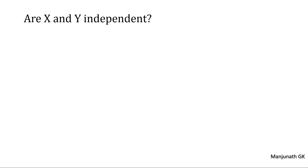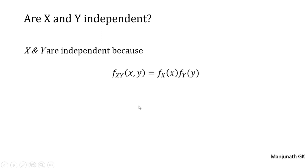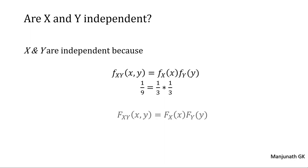Are X and Y independent? To say yes, the bivariate PDF must equal the product of the individual PDFs. The bivariate PDF is 1/9, and fx(x) × fy(y) = 1/3 × 1/3 = 1/9, so LHS equals RHS — X and Y are independent. One more condition: the bivariate CDF must equal the product of individual CDFs. The bivariate CDF is xy/9, and Fx(x) × Fy(y) = x/3 × y/3 = xy/9, so LHS equals RHS — confirming X and Y are independent.